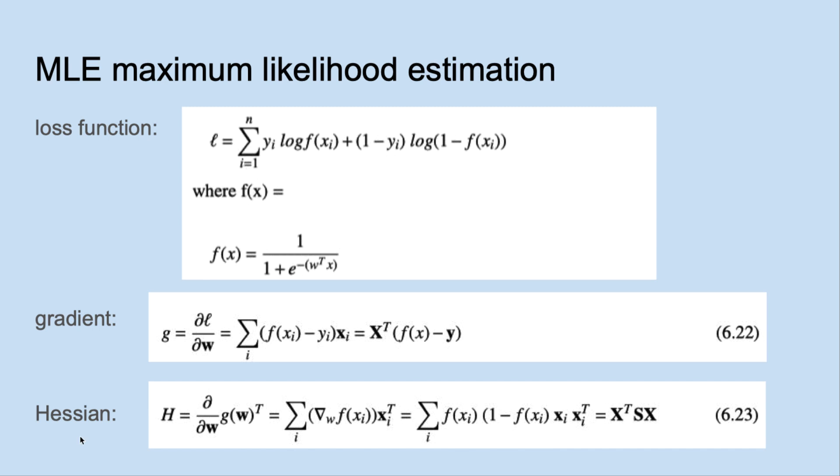At each step, either the full Hessian is recalculated or updated. A key insight in Newton's method is that if it is computationally difficult to compute a minimum for a given function, then come up with a function that shares important properties with the original function, but is easier to minimize.